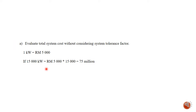For question (a), to evaluate total system cost: for one kilowatt the cost is 5,000 Ringgit. If the system is 15 megawatt, which equals 15,000 kilowatt, then 5,000 multiplied by 15,000 gives a sunk cost of 75 million Ringgit.